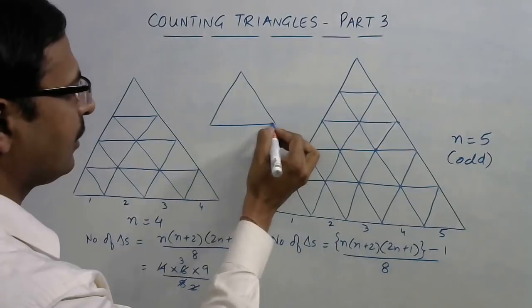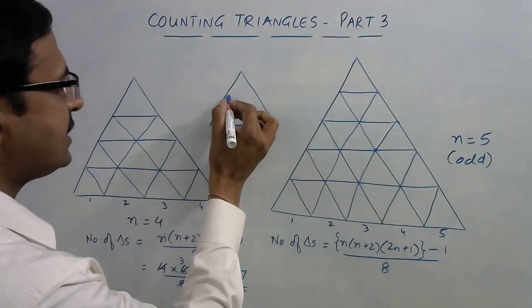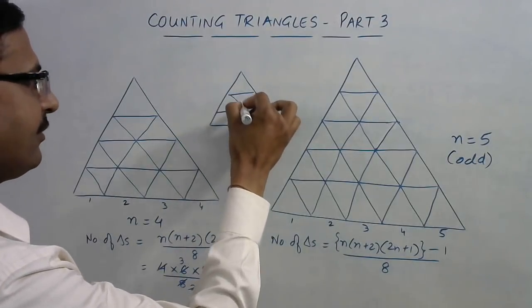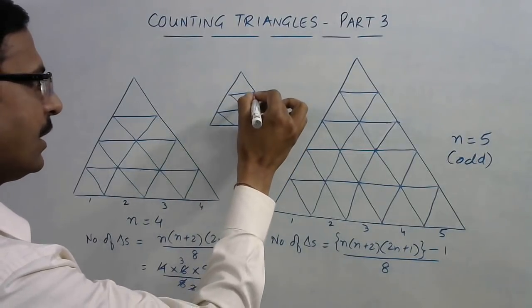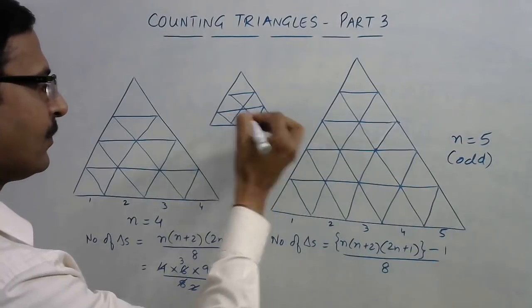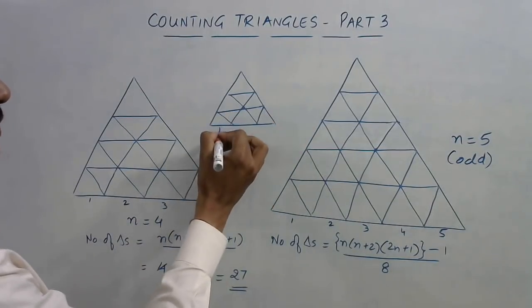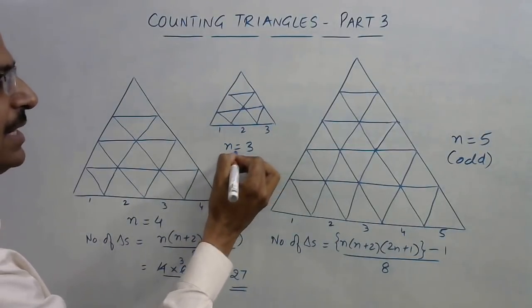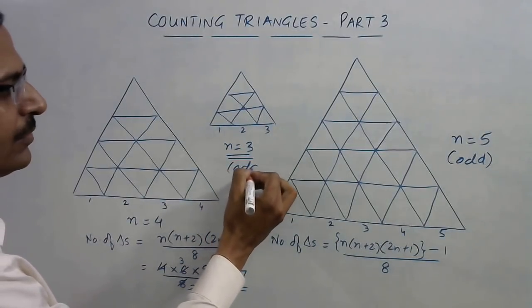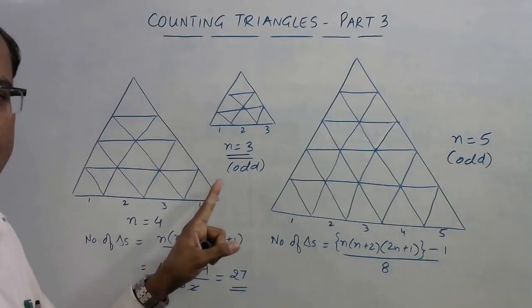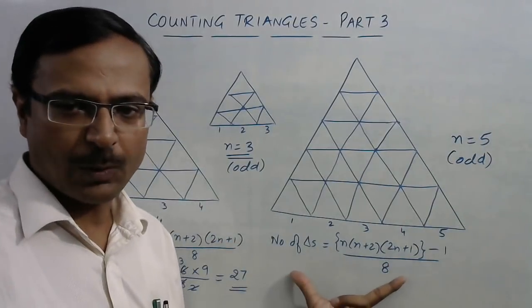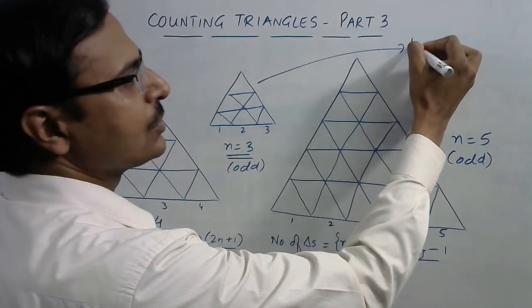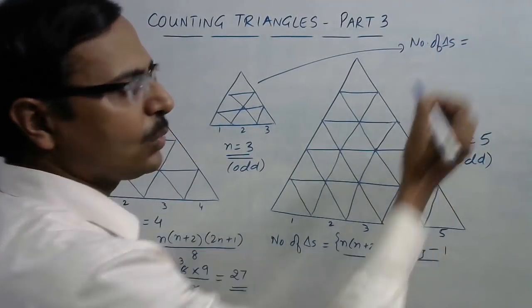I will take a very small figure first of all. I need two lines here, so I will have triangles like this. Now see, the base has one, two, and three parts, so in this case n is three, which is odd. What happens when n is odd? We have to apply this formula. So I am finding number of triangles for this one.